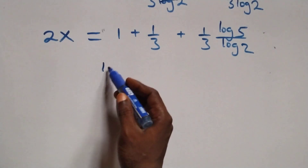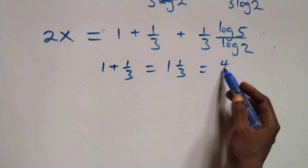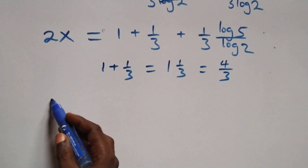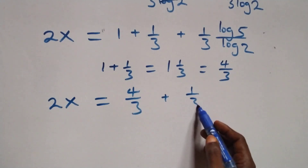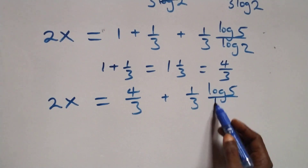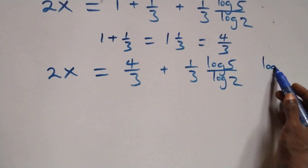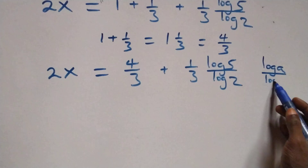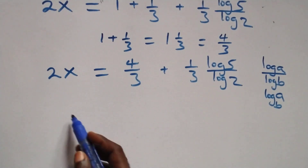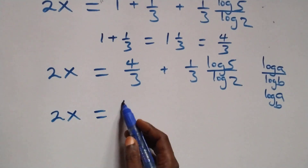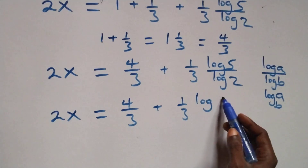Now 1 plus 1 over 3 is the same thing as 4 over 3, so 2x equals 4 over 3 plus 1 over 3 times log 5 over log 2. We then apply the change of base rule: log a over log b is the same thing as log a to base b. So what we have becomes 2x equals 4 over 3 plus 1 over 3 times log 5 base 2.